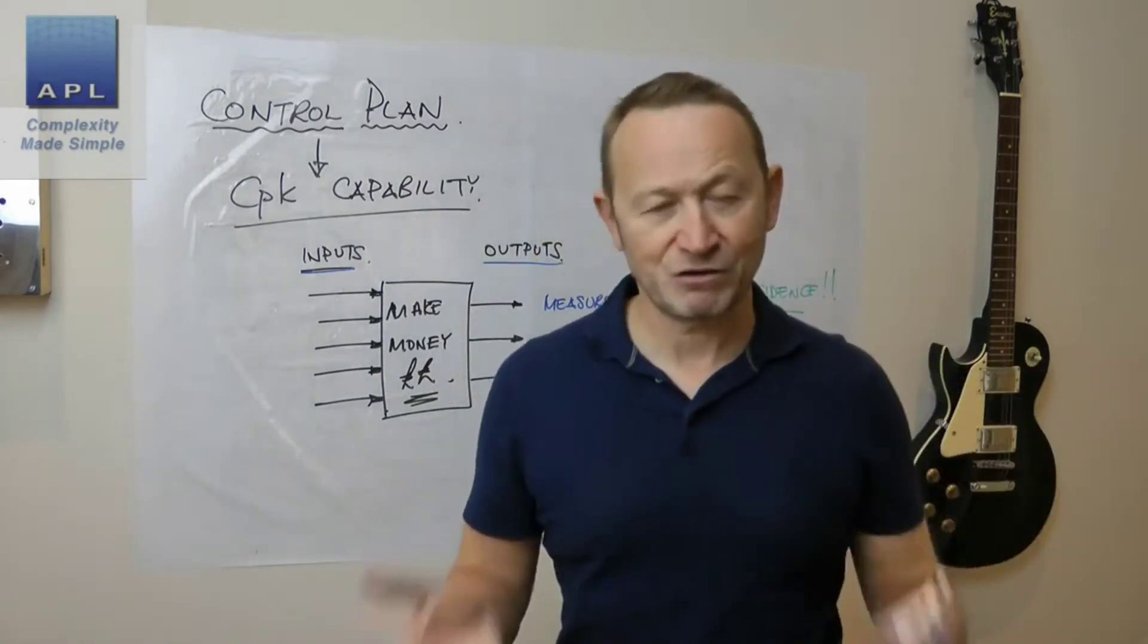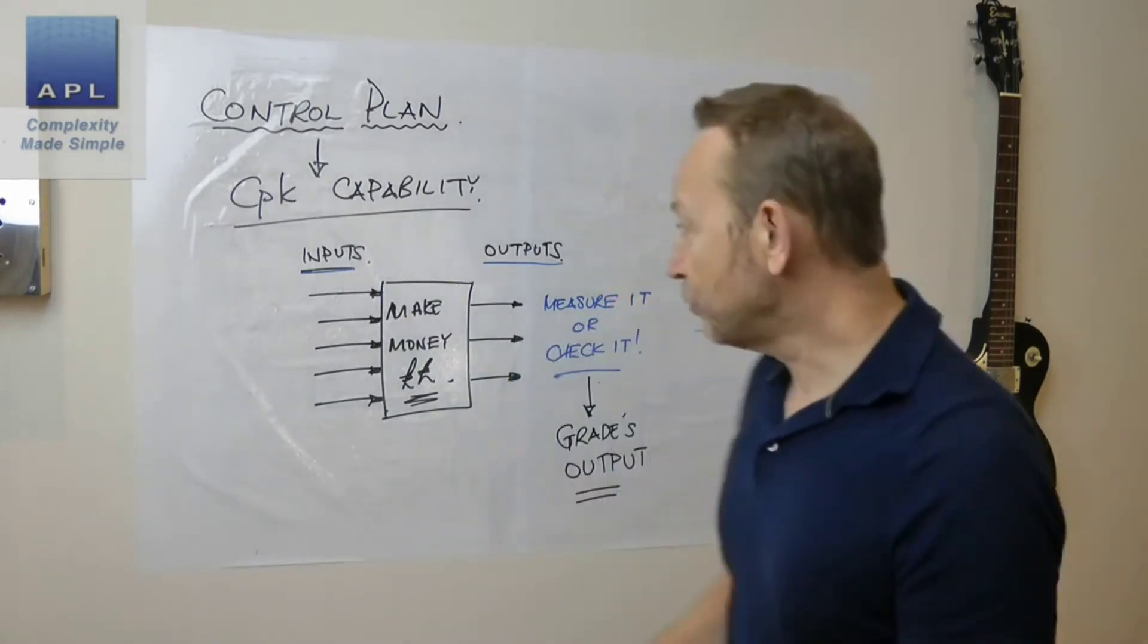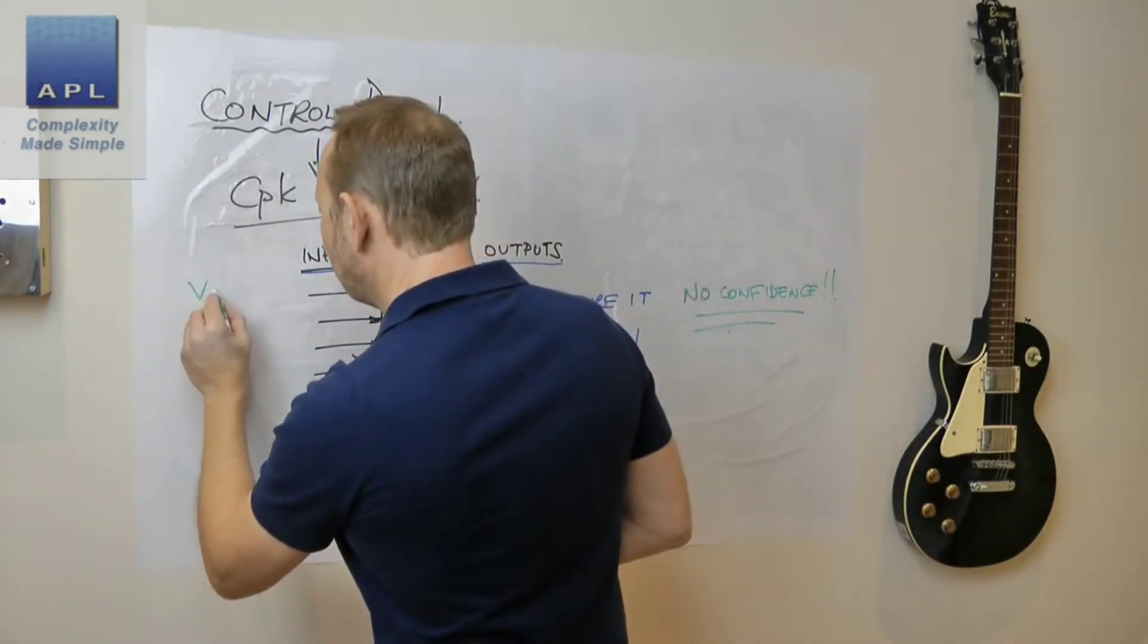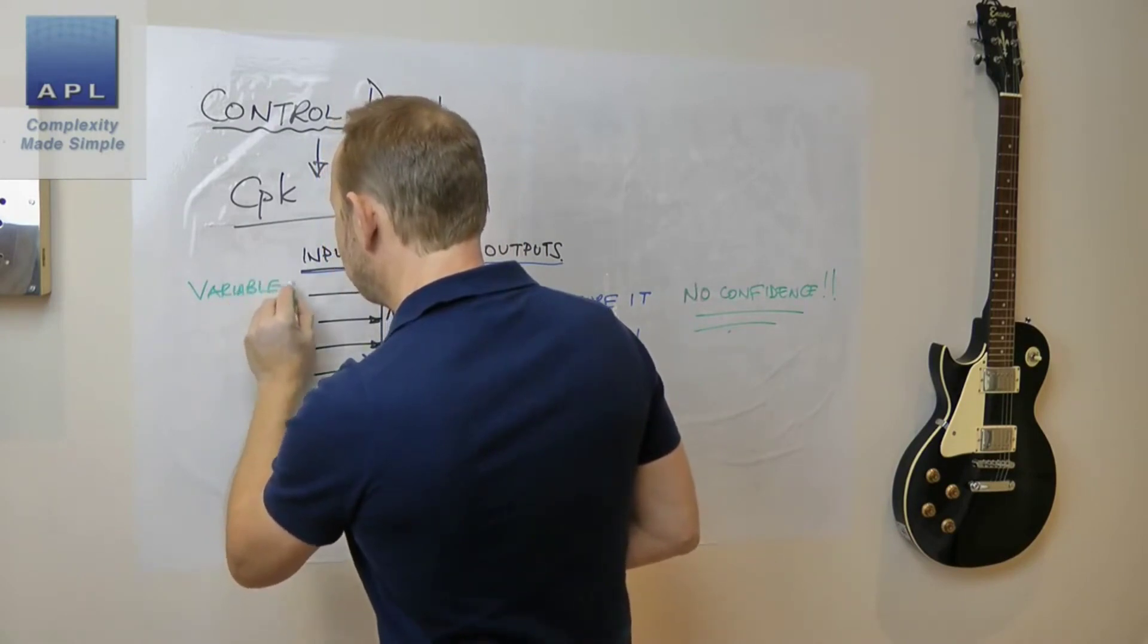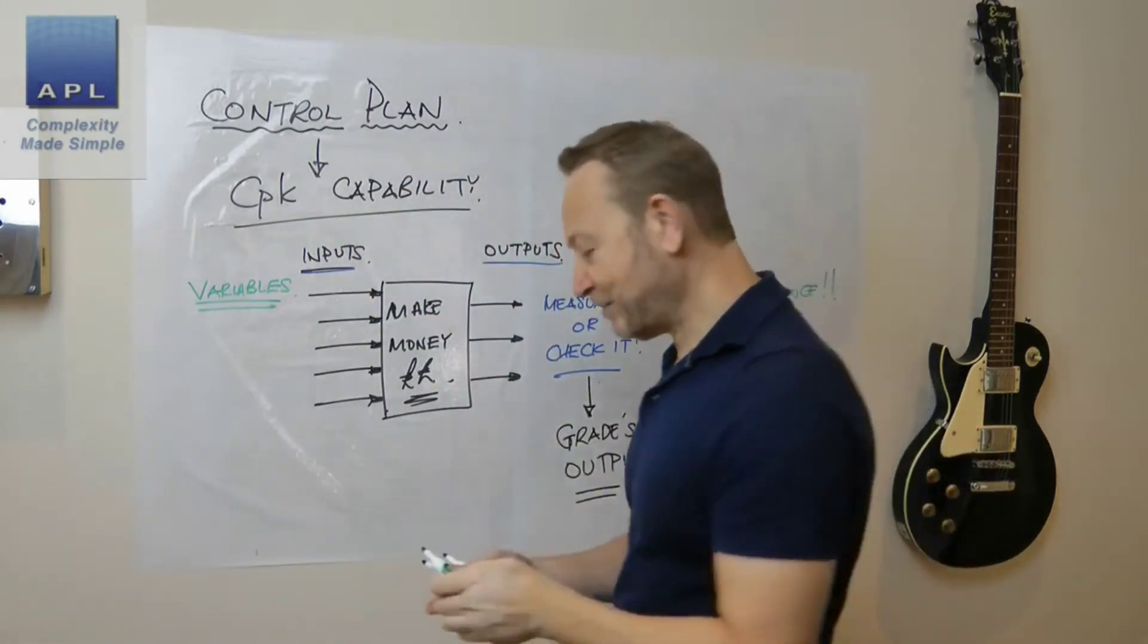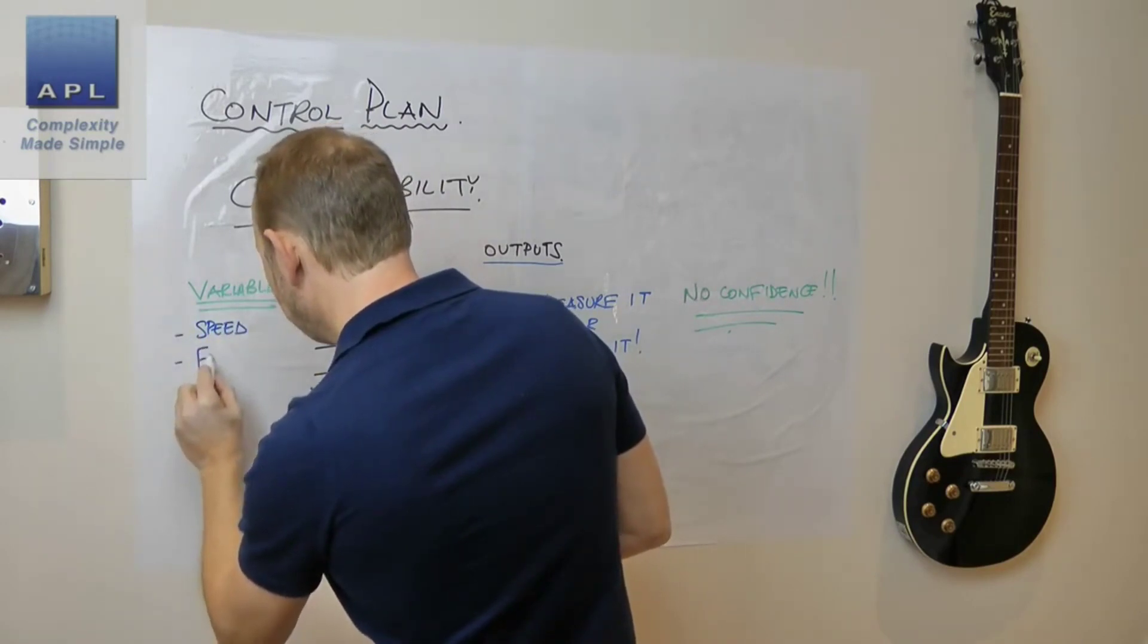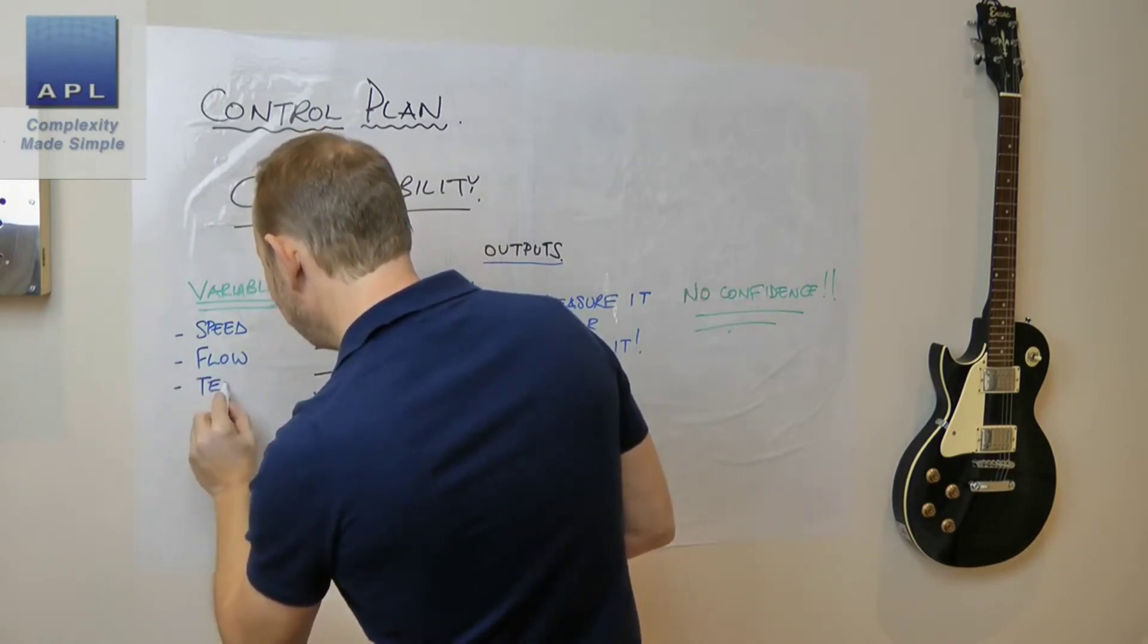A true control plan works on the variables, the inputs, and it identifies individual variables, single things. So it could be settings on the machine, it could be the speed of the machine, it could be the flow setting of a liquid through the machine, it could be a temperature.